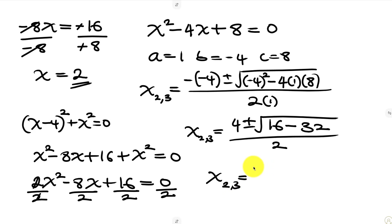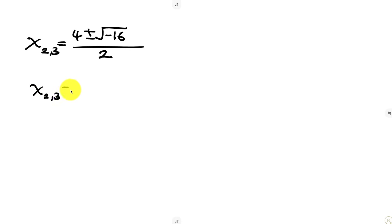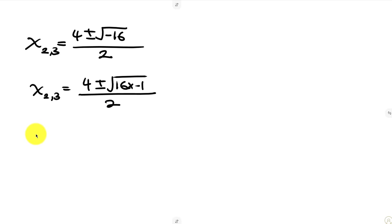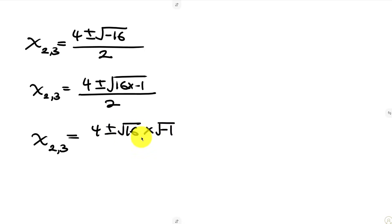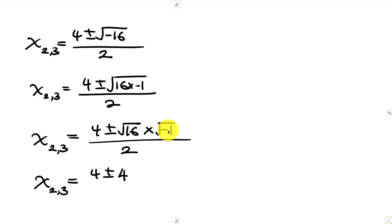This simplifies to x equals 4 plus or minus the square root of negative 16, all over 2. Now, negative 16 is the same as 16 times negative 1. We can separate this into the square root of 16 times the square root of negative 1, all over 2. The square root of 16 is 4, and the square root of negative 1 is i, a complex number.